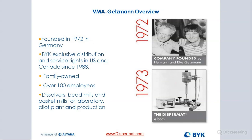The couple in the picture on the top right is Herman and Elke Getzman. Herman is the founder of VMA Getzman. The company was founded in 1972 and is still in family hands — the next generation is now managing and running the business. They're about 30 miles east of Cologne, in the center of Germany. It's a well-developed facility with a lot of resources to design new types of media mills. About 40% of everything VMA manufactures is custom, including equipment for battery and fuel cell applications.